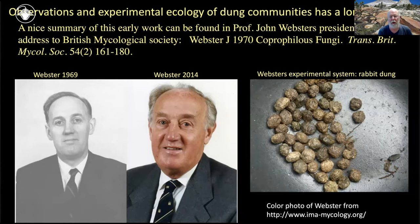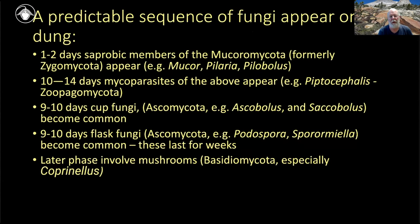In his summary of early work, one thing Webster points out is that there's a very predictable sequence of fungi that appear on dung. In the first two days, you get some of the early Mucoromycota — things like Pilobolus — which show up immediately. About two weeks later, their mycoparasites show up. Around the same time, the Ascomycota begin appearing — both cup fungi and flask fungi. Then the last phase would be the mushrooms (Basidiomycota).